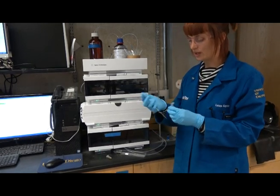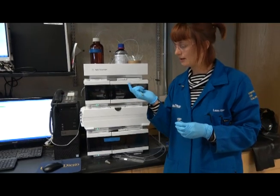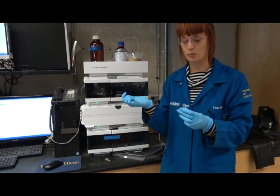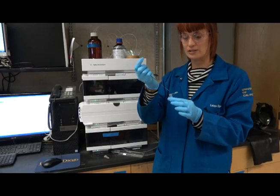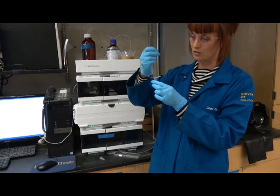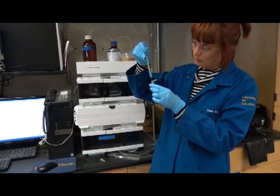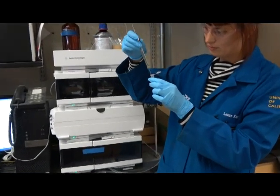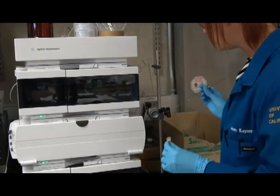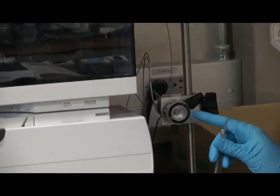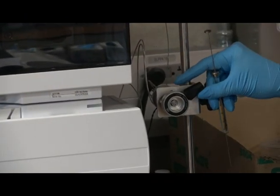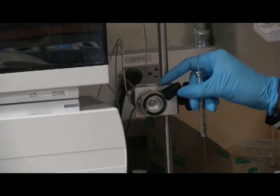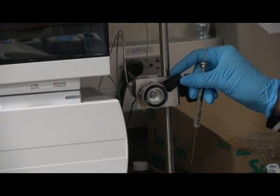Now to do the injection, what you do is you're going to inject three times 20 microliters of your polymer solution into the system. The way you do this is you take out about 30 microliters of the solution, and you're going to place it into this injection loop. Now to do this, the knob here has to be on the load position,